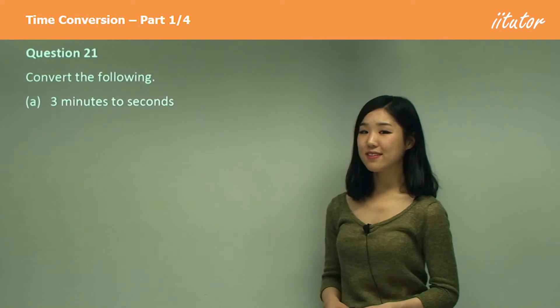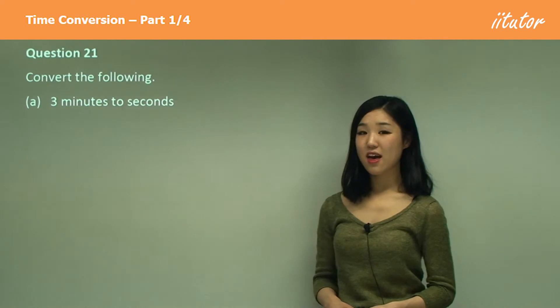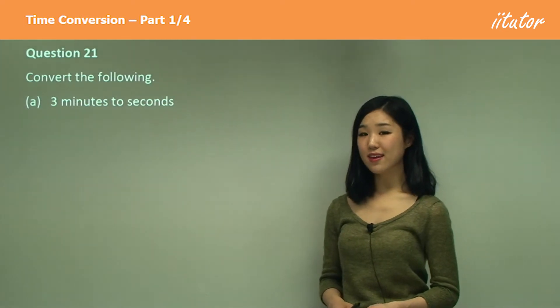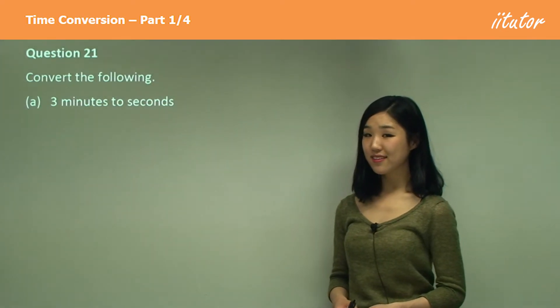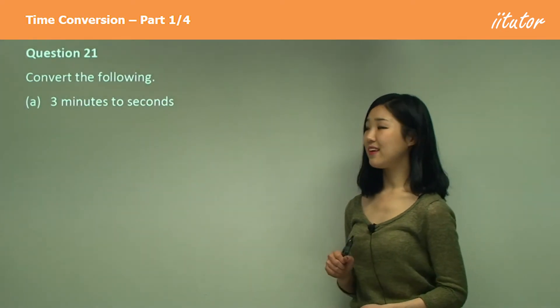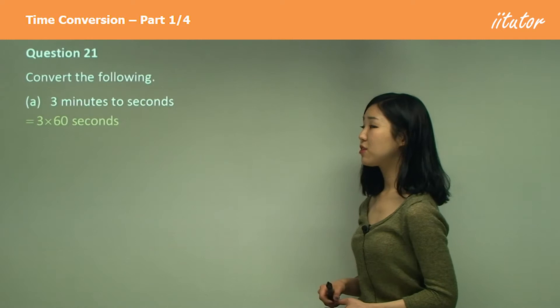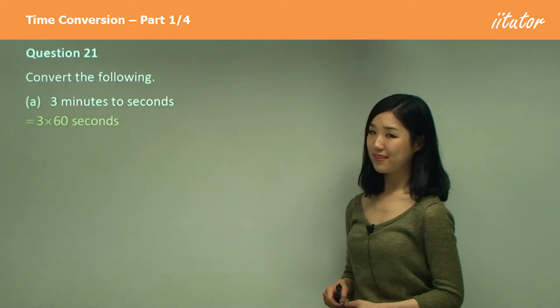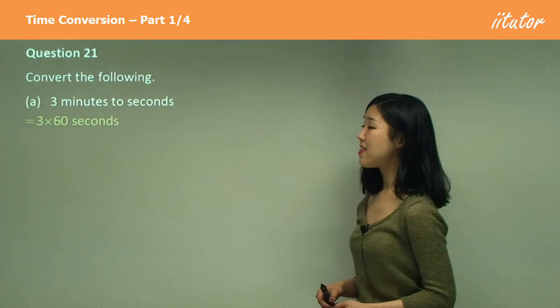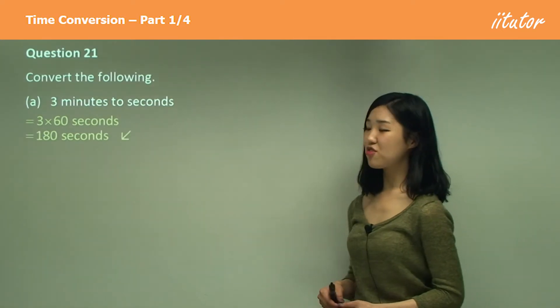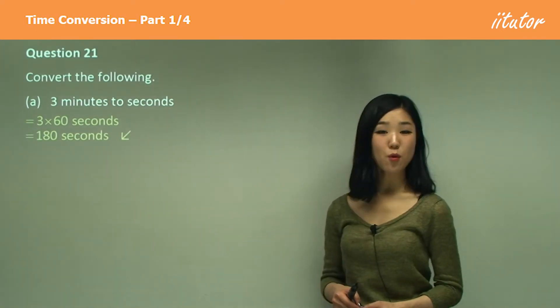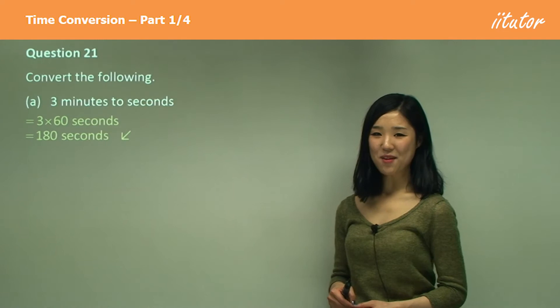A: three minutes to seconds. How many seconds in a minute? 60. So we simply do three times 60 seconds, and then it's going to be 180 seconds. That's all there is.